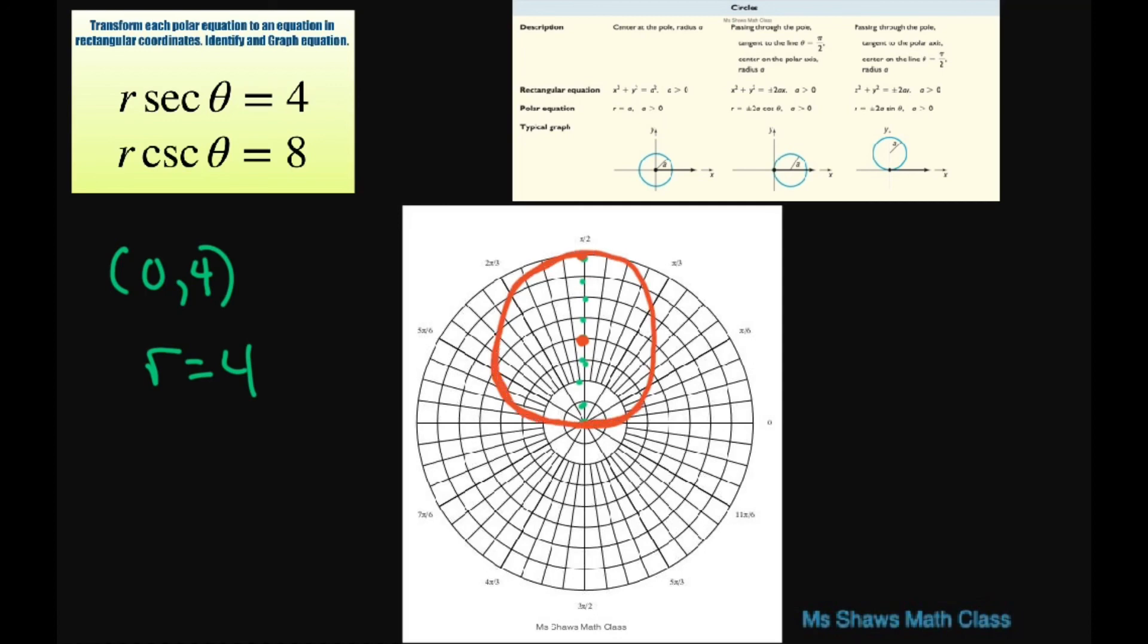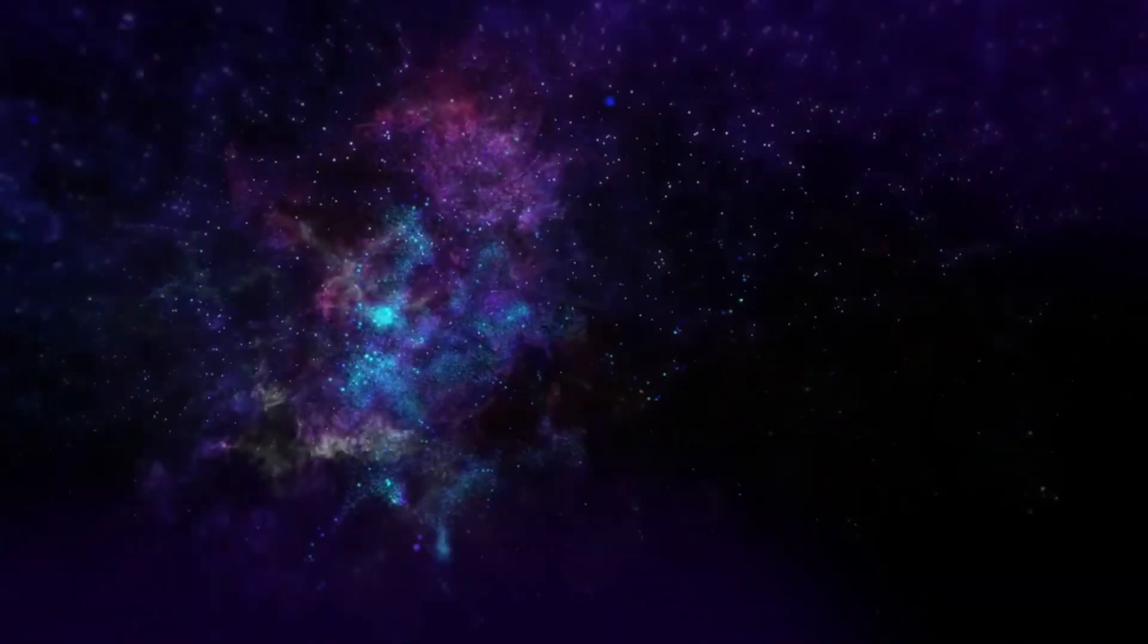As much as I can get it there. Basically that's this one. It's tangent to the polar axis here and centered on this line theta equals pi divided by 2. And that's it. Thank you. Have a nice day. Bye bye.